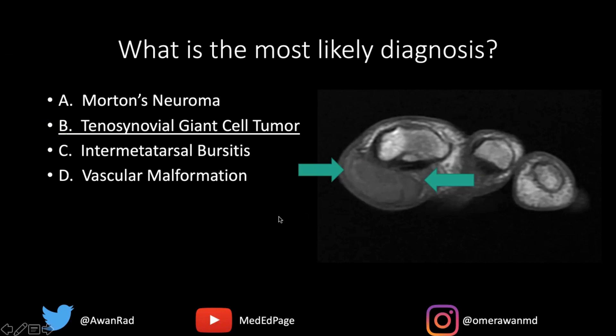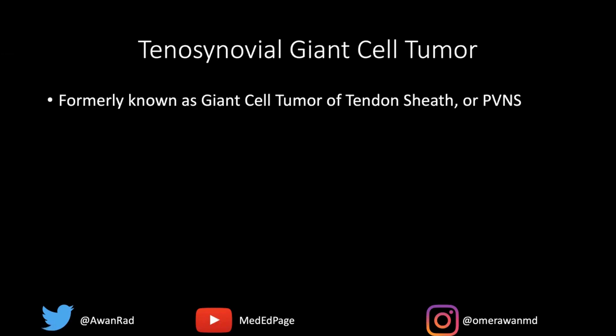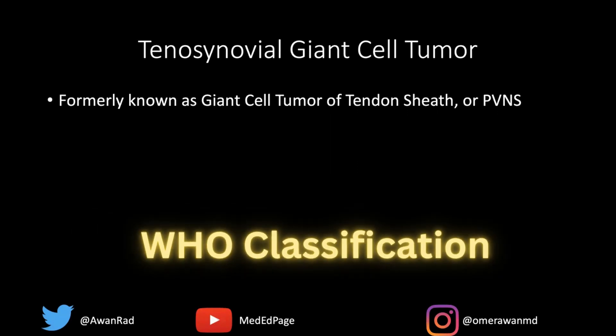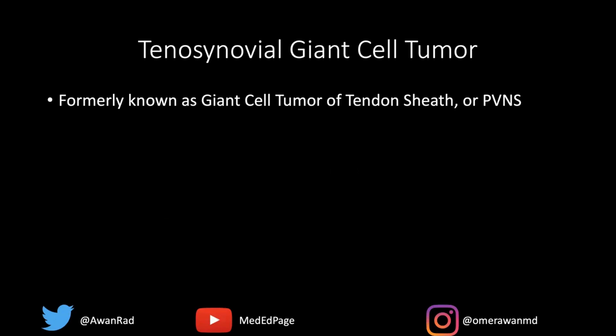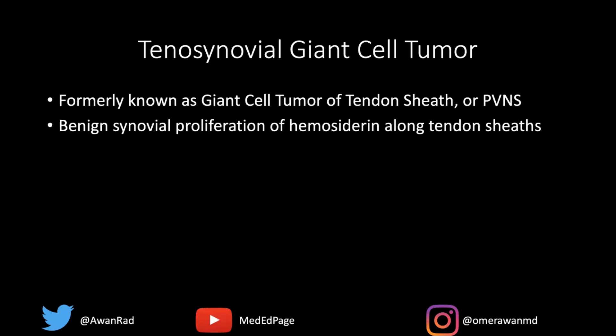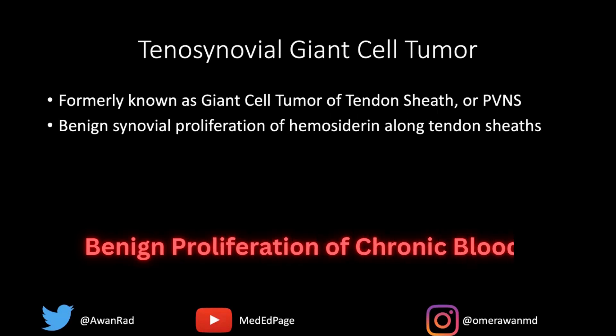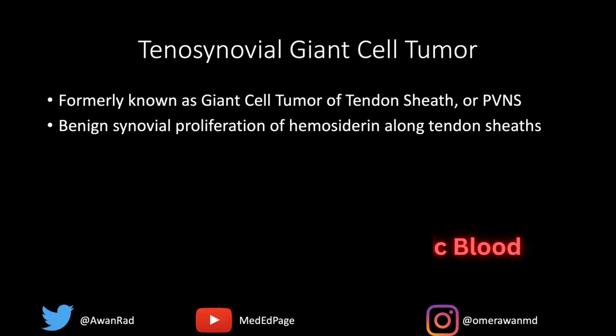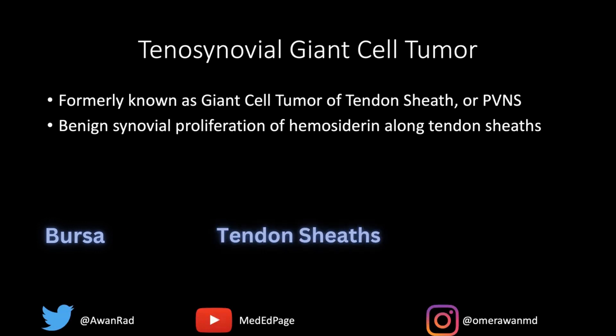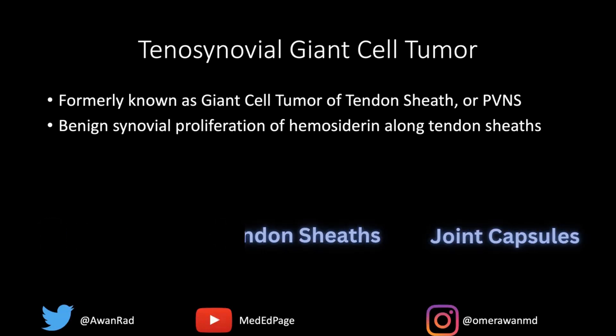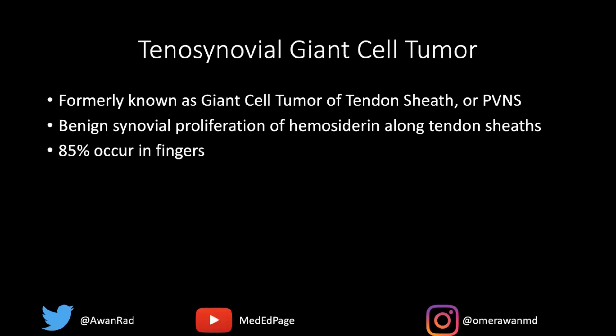So the best diagnosis here is a tenosynovial giant cell tumor. This was formerly known as giant cell tumor of the tendon sheath, or PVNS — pigmented villonodular synovitis. Now, according to the WHO classification, it is coined tenosynovial giant cell tumor. This is essentially a benign proliferation of chronic blood or hemosiderin along bursae, tendon sheaths, and joint capsules — in this case, associated with the tendon.